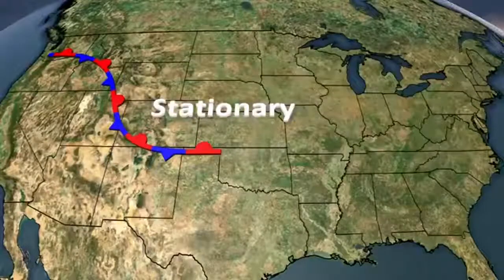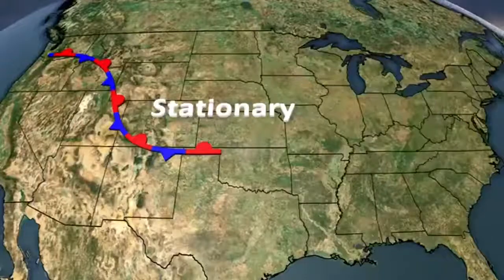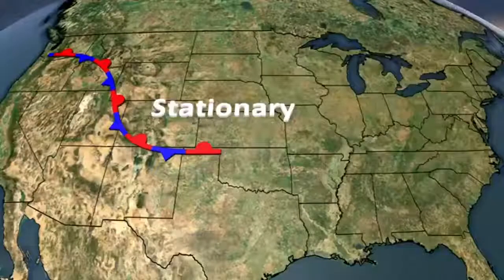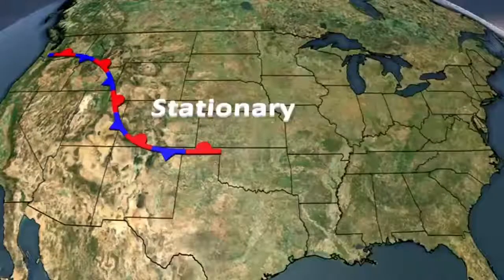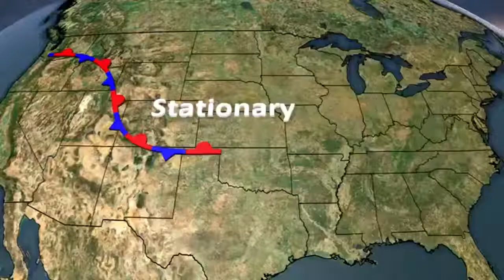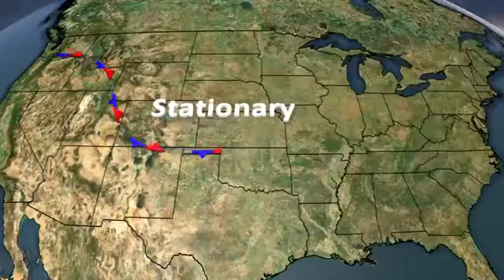The first is a stationary front. This can be referred to as the calm before the storm — neither the cold nor the warm front has more effect on the other.